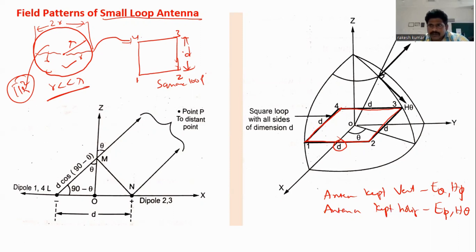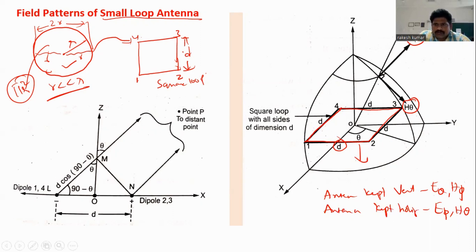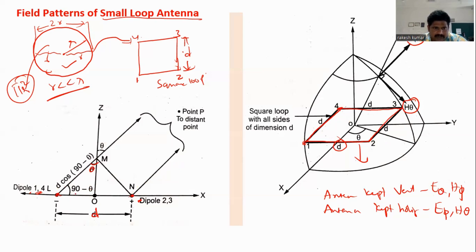The components available here are E_phi and H_theta. My antenna is kept at the origin in a horizontal orientation. Now, since this is a small dipole loop, let us consider sides one and four together, and two and three together. So we have two point sources separated by a distance d.